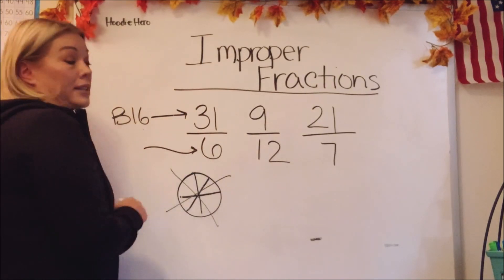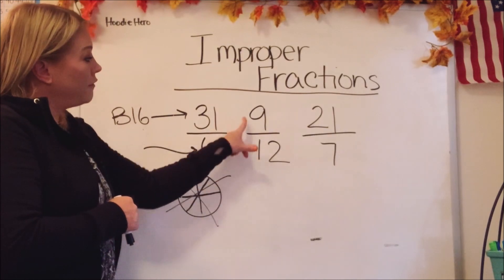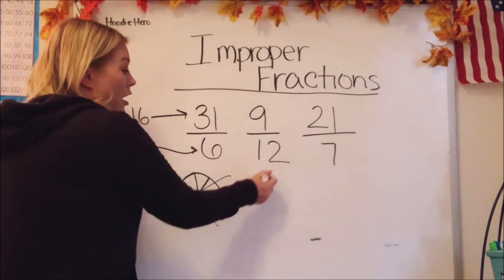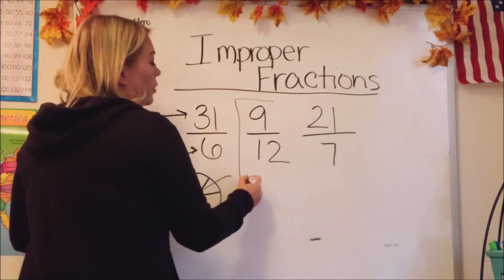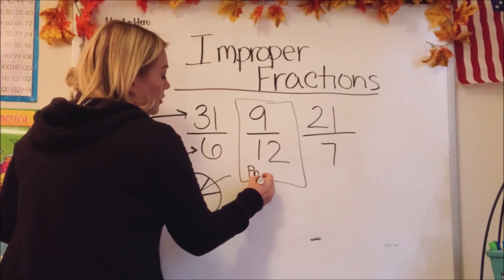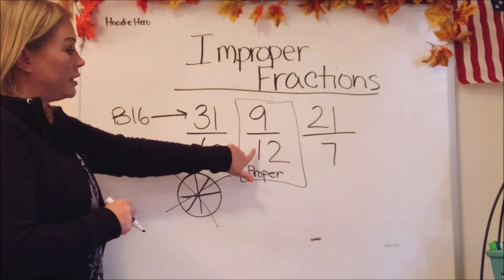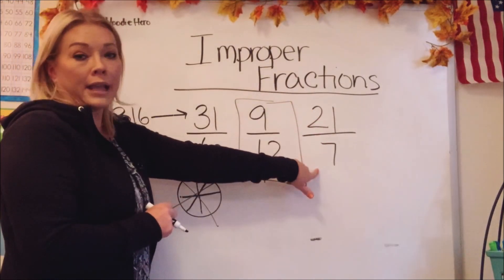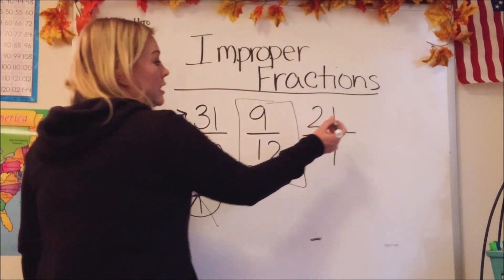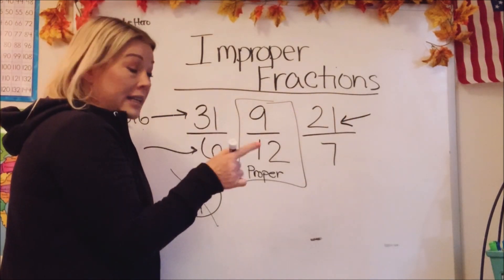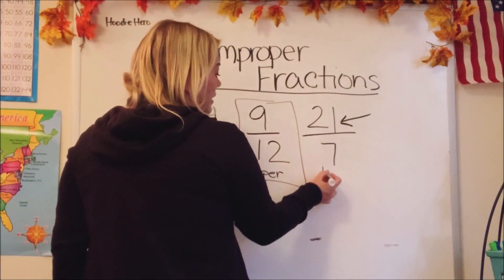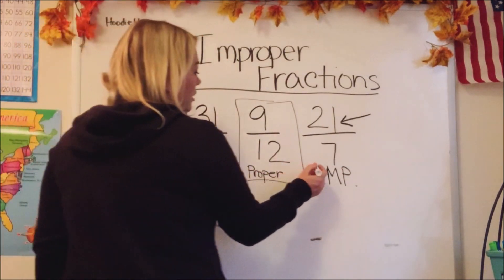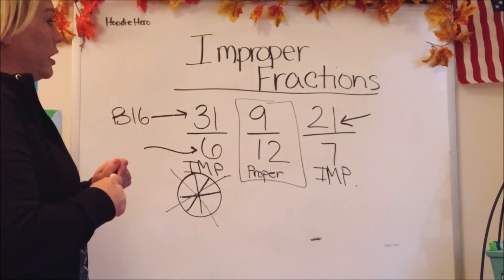Let's move to the second number: we have nine twelfths. Is the big number on the top or the bottom? The denominator is the big one, so this is actually a proper fraction. This is acceptable because we're talking about nine parts of 12 total and we can do that. Now let's look at the last one: 21 sevenths. Is this one top heavy? It is, because 21 is larger than seven, so this one is improper as well.